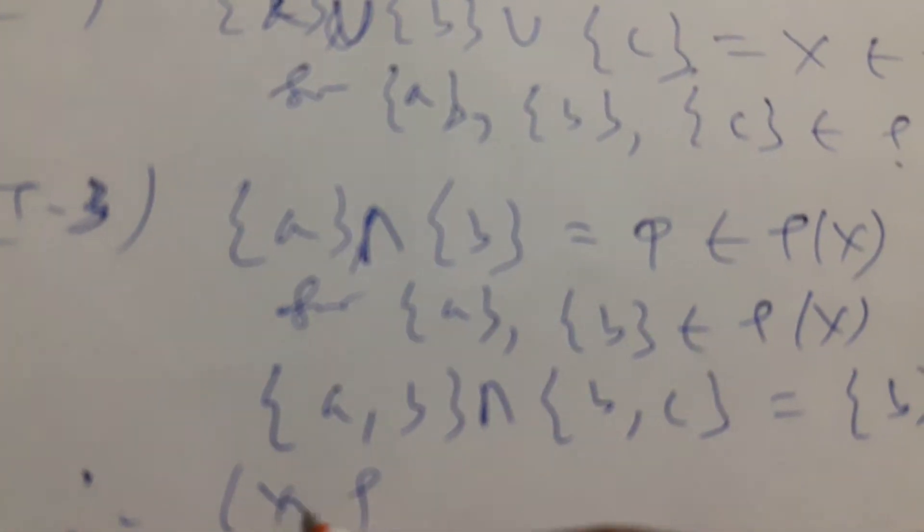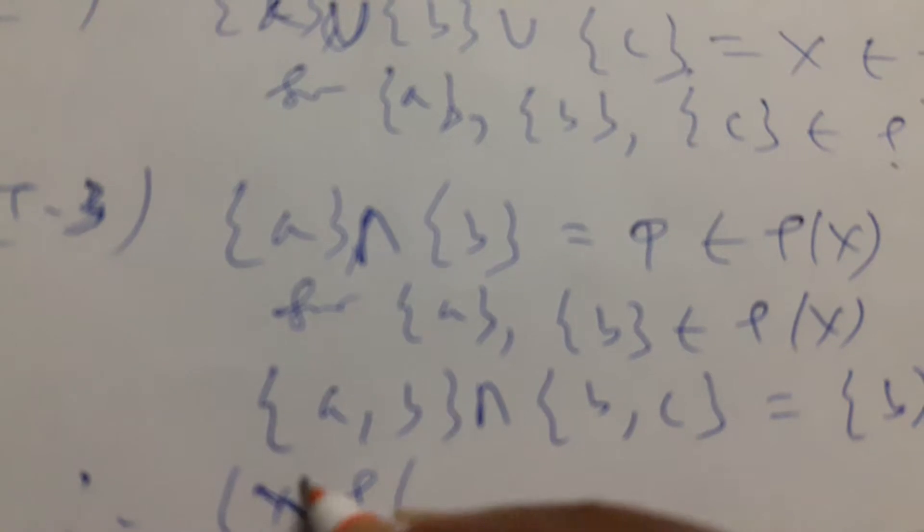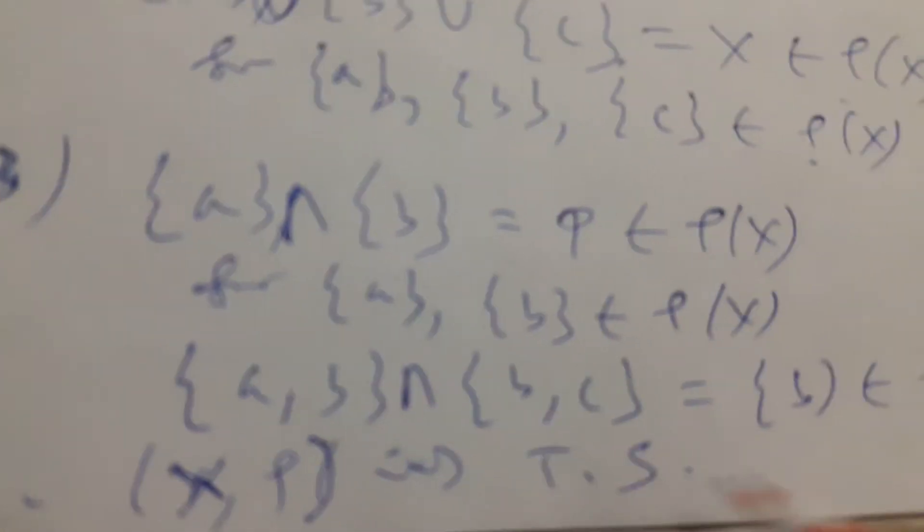Hence (X, ρ) is a topological space. Therefore, this topology is called discrete topology.